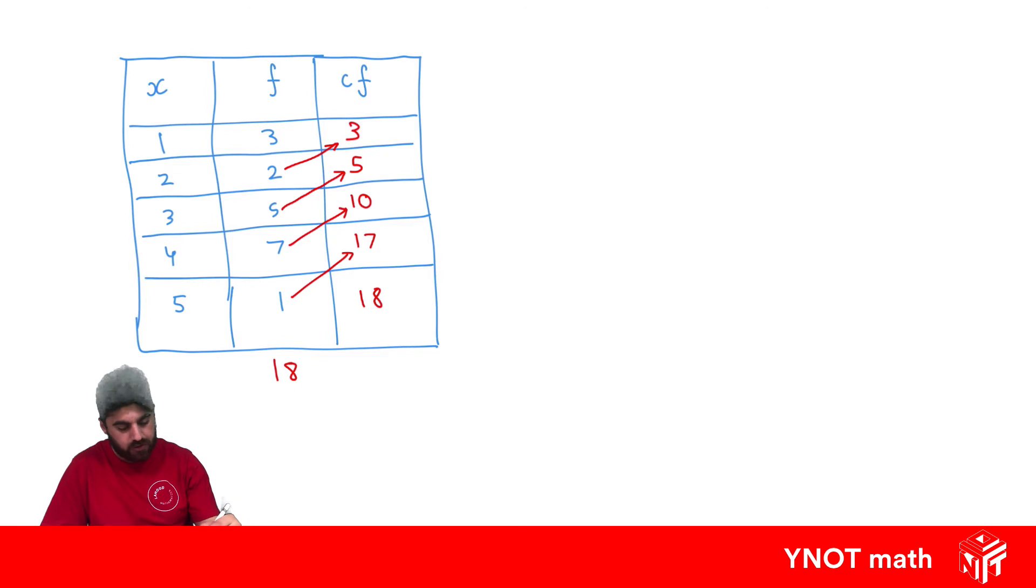And we can even show this on a cumulative frequency histogram, so let's go ahead and draw one up. So we've got our scores of 1, 2, 3, 4, and 5.